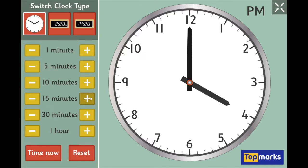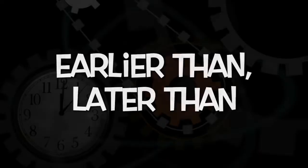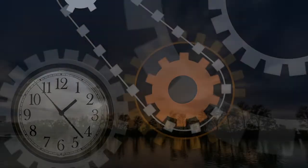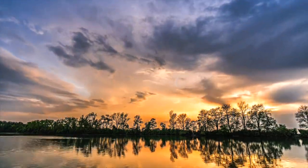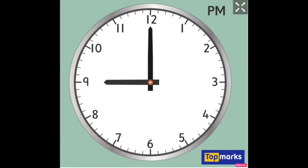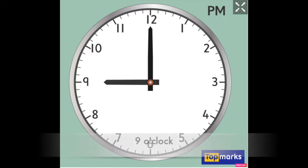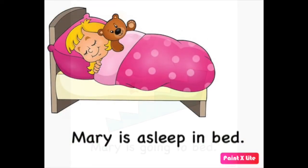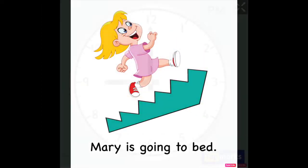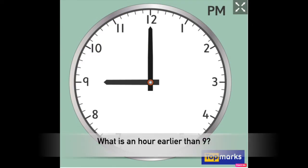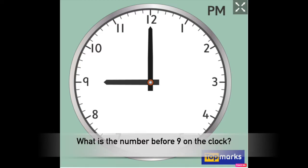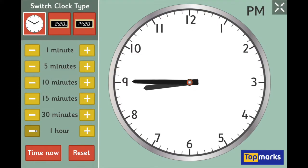Practise these times on the teaching clock yourself so you can get really good at telling the time. Now we are going to move on to earlier than and later than times. I am going to give you a time at the start and you must tell me what you think it is. What time is it now? It is nine o'clock. It is night time in my story and Mary is asleep in bed, but she went upstairs to bed an hour earlier than this. What time did Mary go to bed? What is an hour earlier than nine? What is the number before nine on the clock? The answer is eight o'clock.